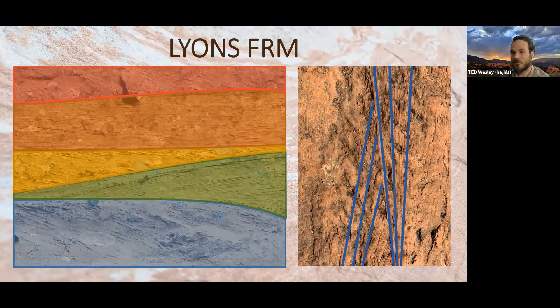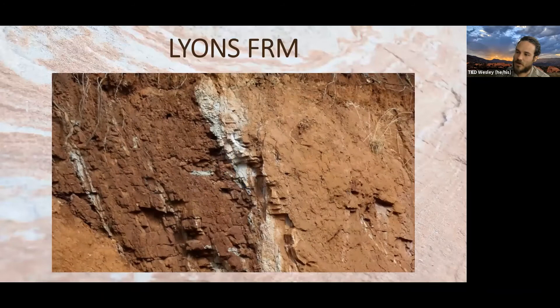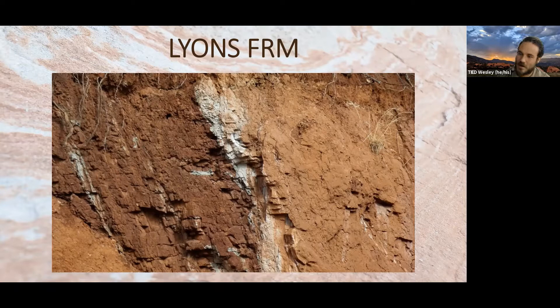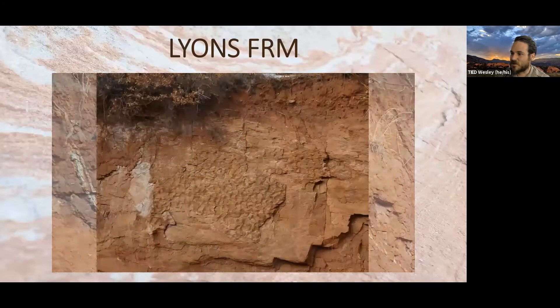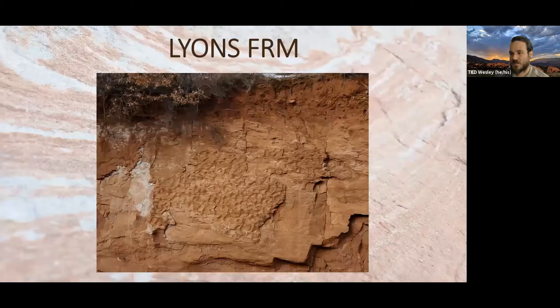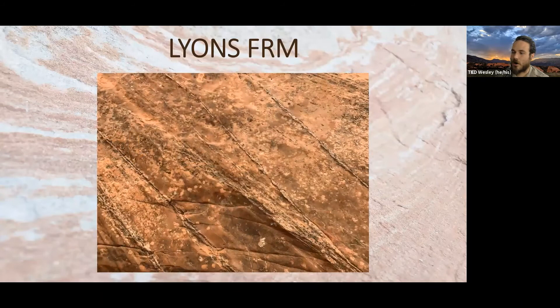Moving on to the middle Lyons member — this is really a soft mudstone or siltstone, which is why there's not a lot of it left; it erodes super easily. It's basically compacted soil — to call it a rock would be generous. There are some places where we have conglomerates, and you can even see some ripples in places, showing we did have some moving water in the area.